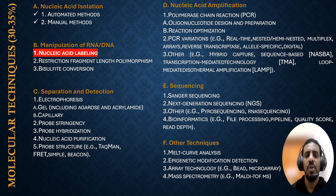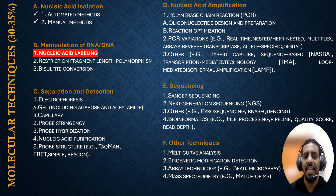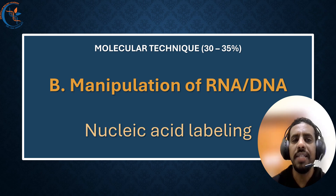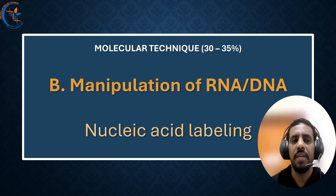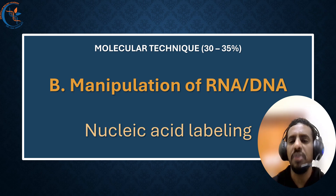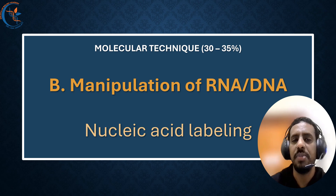In our previous lecture, we started the first section of molecular techniques: Nucleic Acid Isolations. Today, we will move on to the second section of exams, Manipulation of RNA and DNA. These molecular techniques parts make up 30% to 35% of the total molecular biology ASP exam. So let's focus on questions related to the manipulation of RNA and DNA and review molecular biology ASP questions from the previous exams.